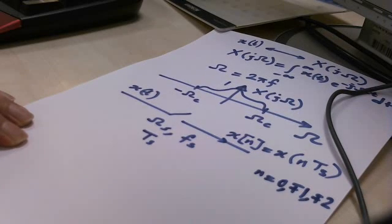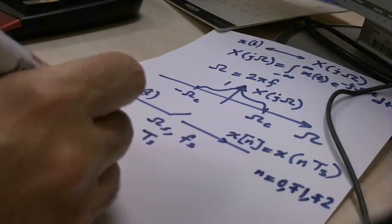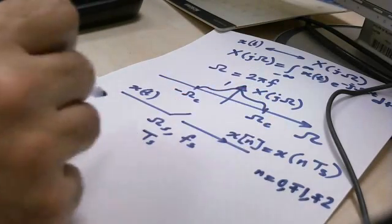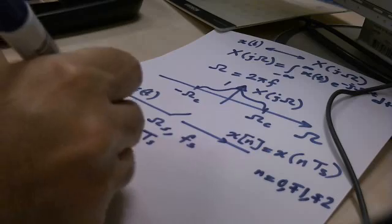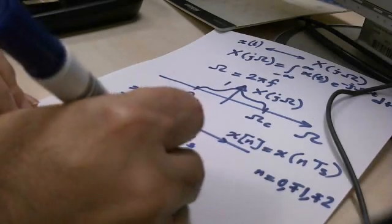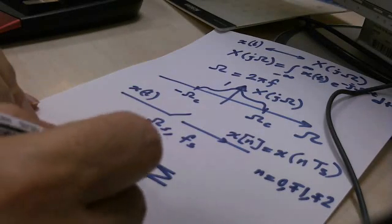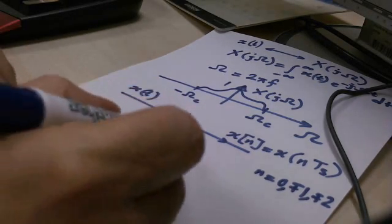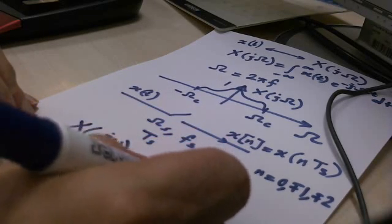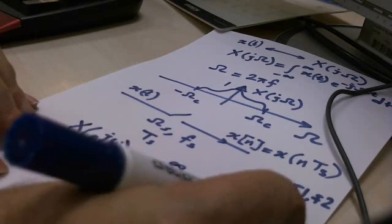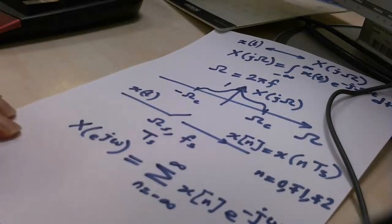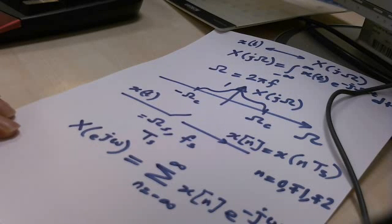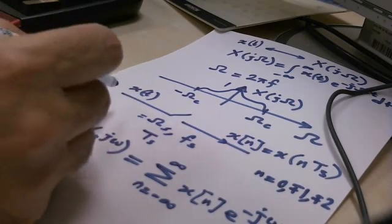So X of n has a discrete time Fourier transform X of e to the j omega equals summation n from minus infinity to plus infinity xn e to the minus j omega n. And let's assume that my sampling frequency is greater than 2 omega c, but for the time being, I'll just make it equal to 2 omega c.